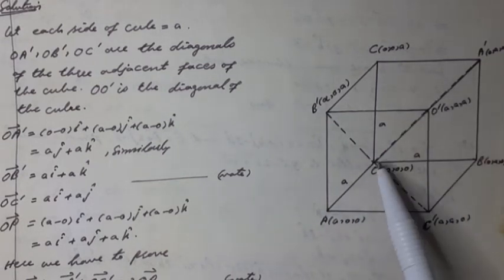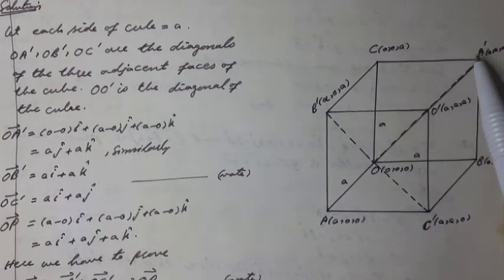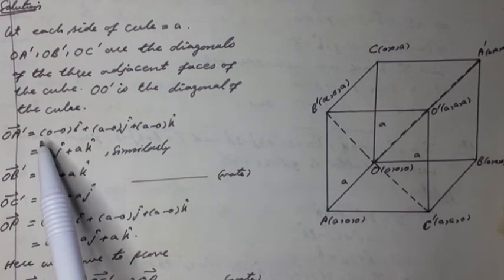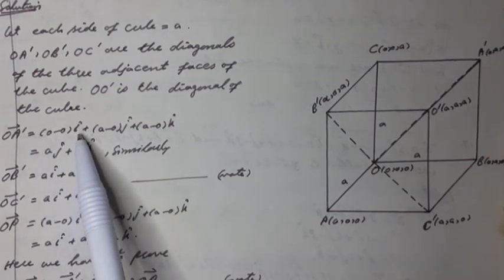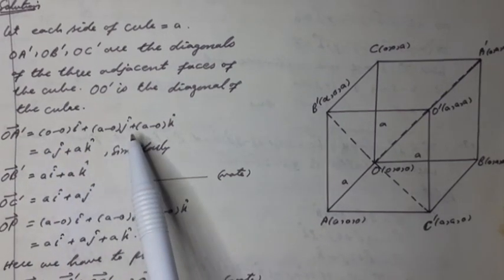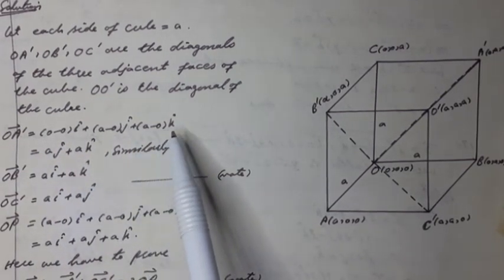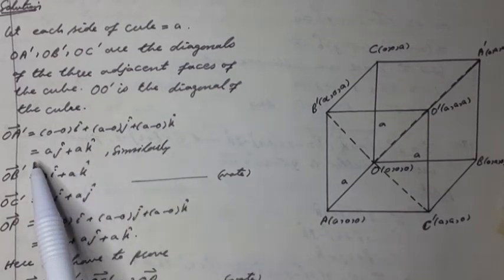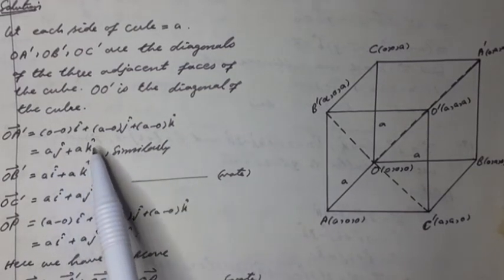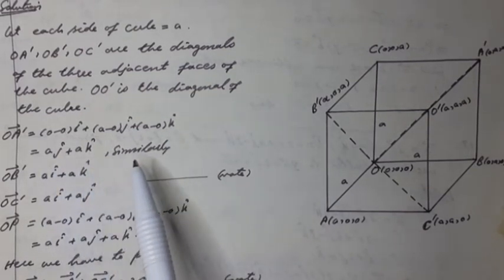Note it. Therefore, vector OA' can be written as (0-0)î + (A-0)ĵ + (A-0)k̂, which equals Aĵ + Ak̂.